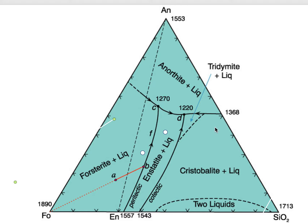In this video, we're going to take a look at the ternary diagram: anorthite, SiO2, and forsterite. We're calling it SiO2 rather than quartz because we have a couple of different polymorphs that are involved. We can even have two silica-rich liquids down here.